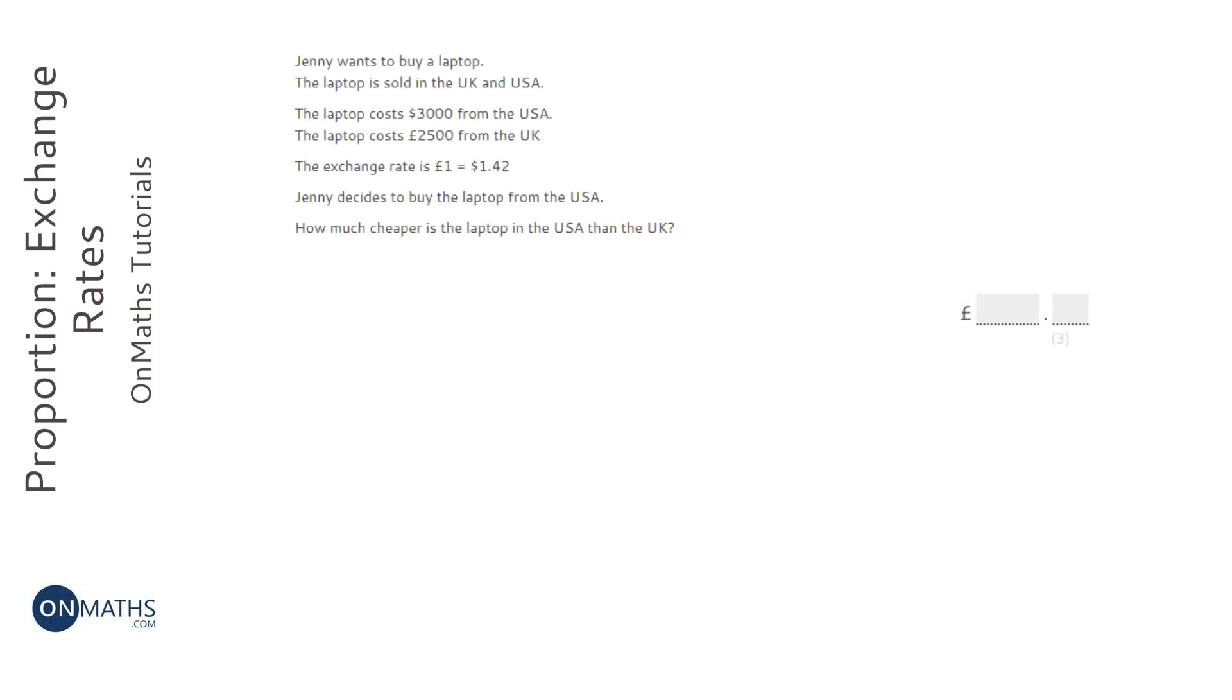Okay, so this question is about exchange rates, and this part here is quite important. If I just rewrite that to make it a bit bigger, this is basically saying that to get from pounds to dollars, we just need to times by 1.42.